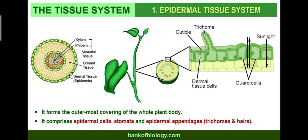First, the epidermal tissue system. As you can see in the picture, there is xylem and phloem (vascular tissue), ground tissue, and dermal tissue. The epidermis is the outermost layer. The epidermal tissue system forms the outermost covering of the whole plant body. It comprises epidermal cells, stomata, and epidermal appendages such as trichomes and hairs.